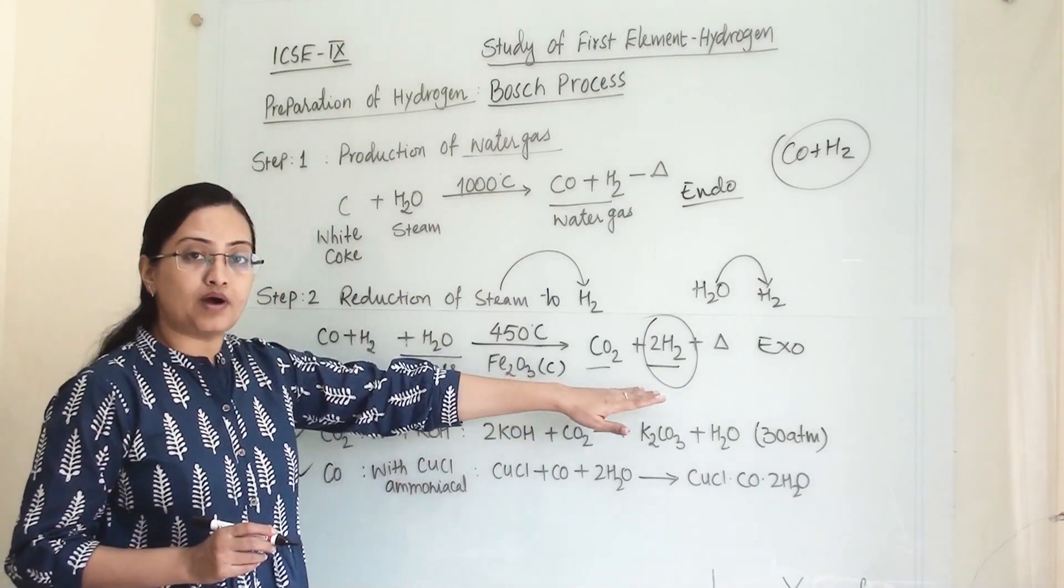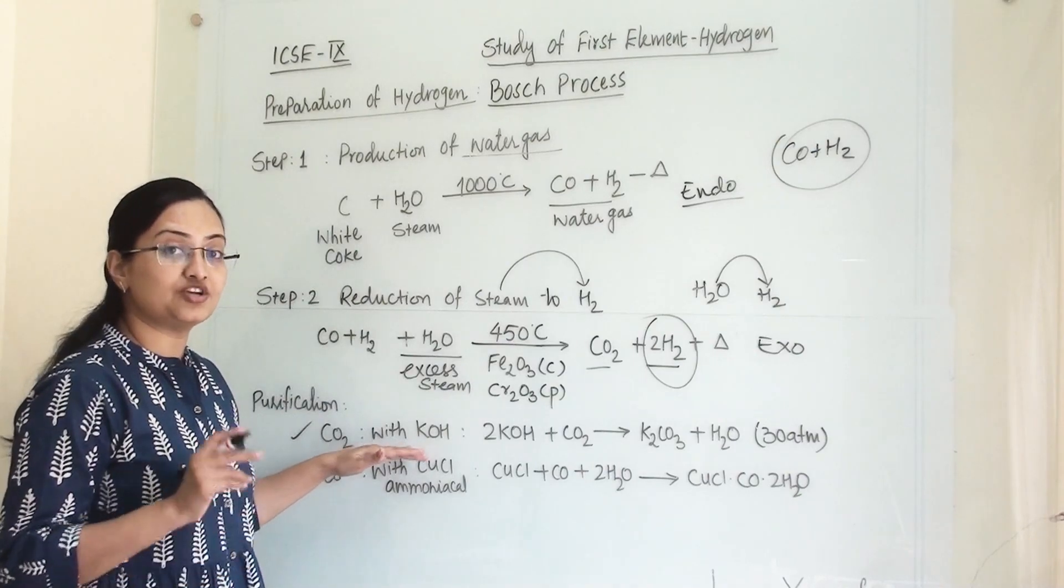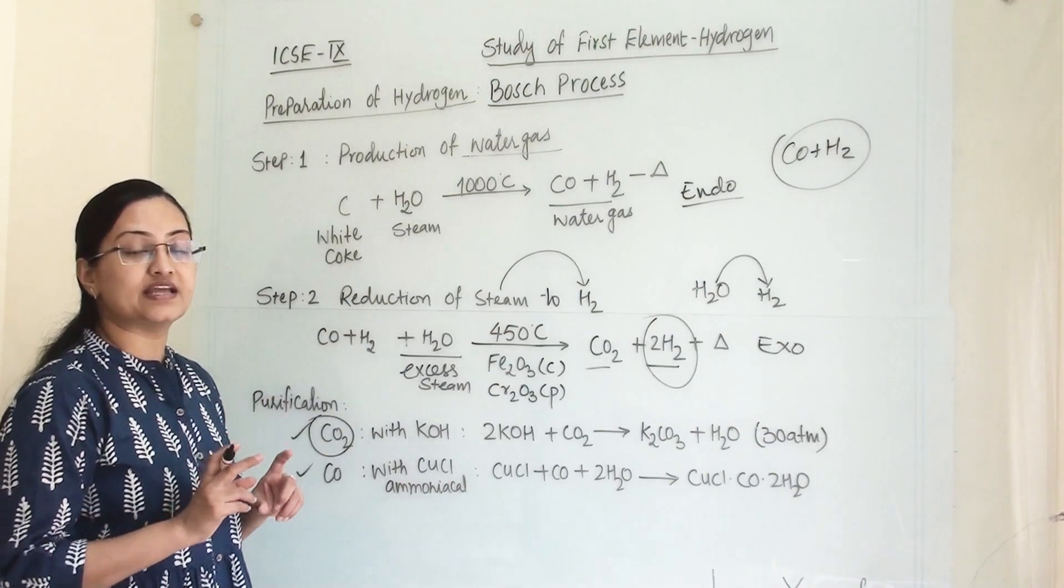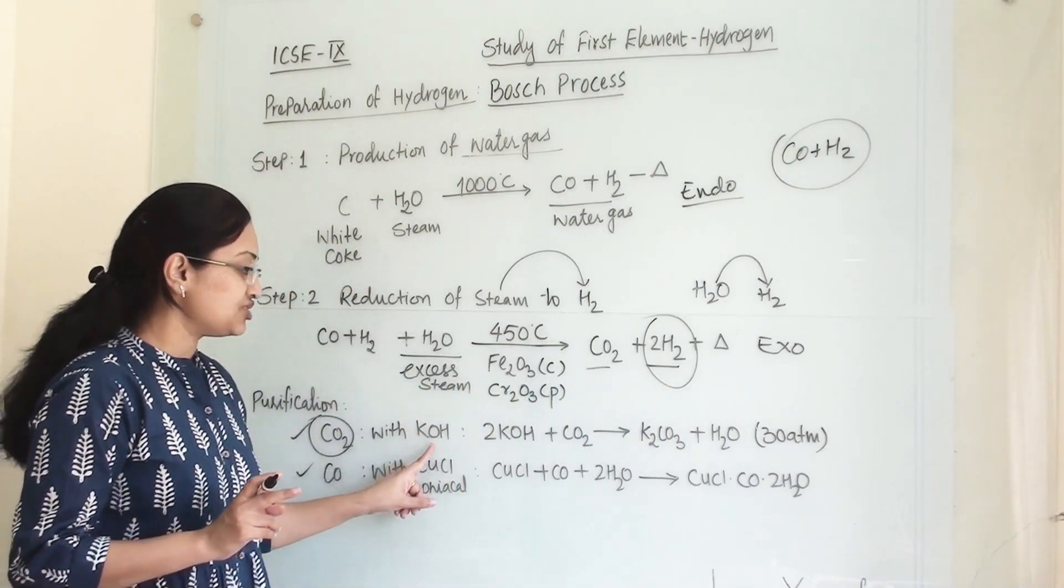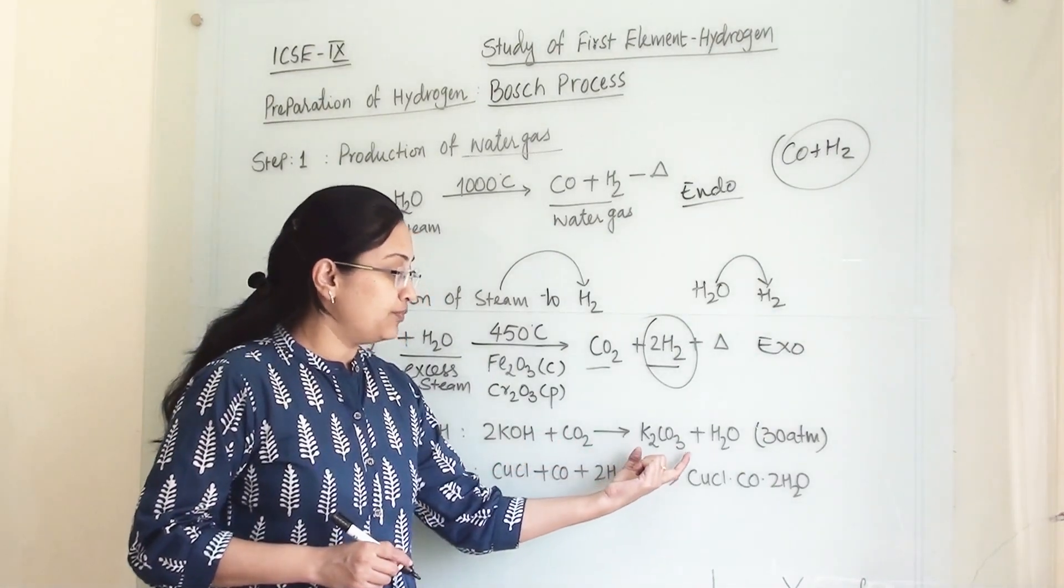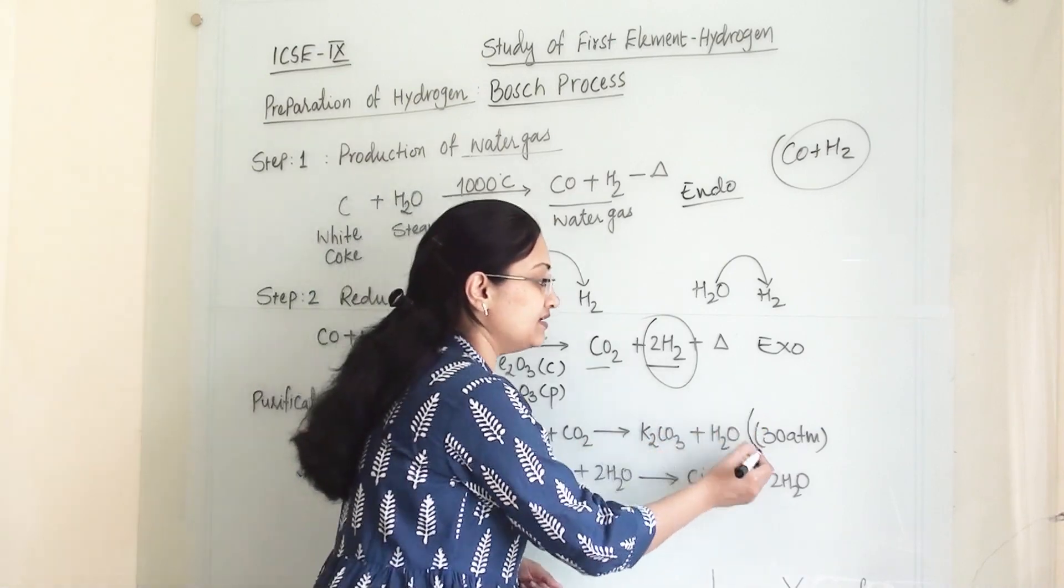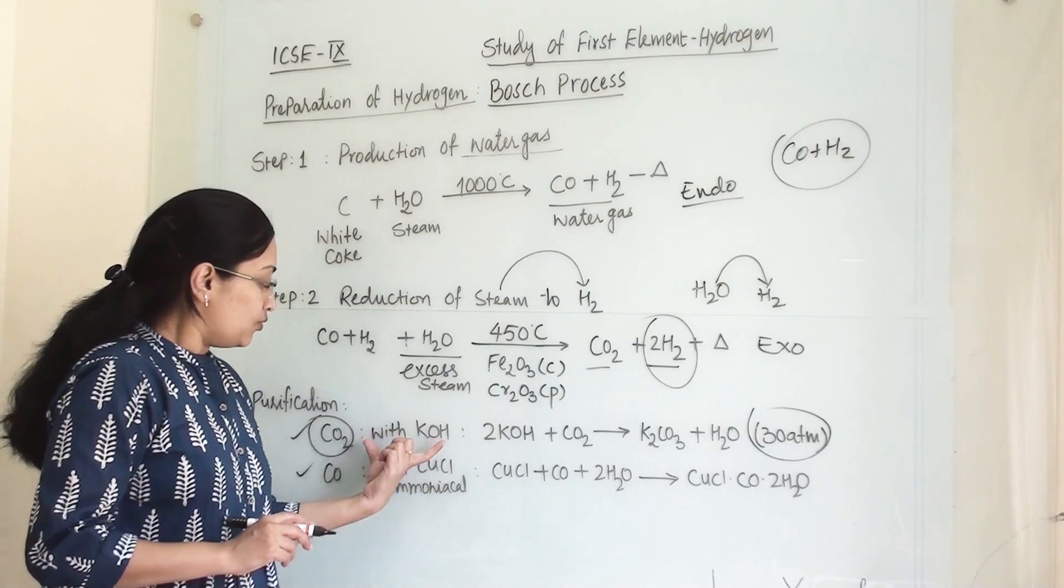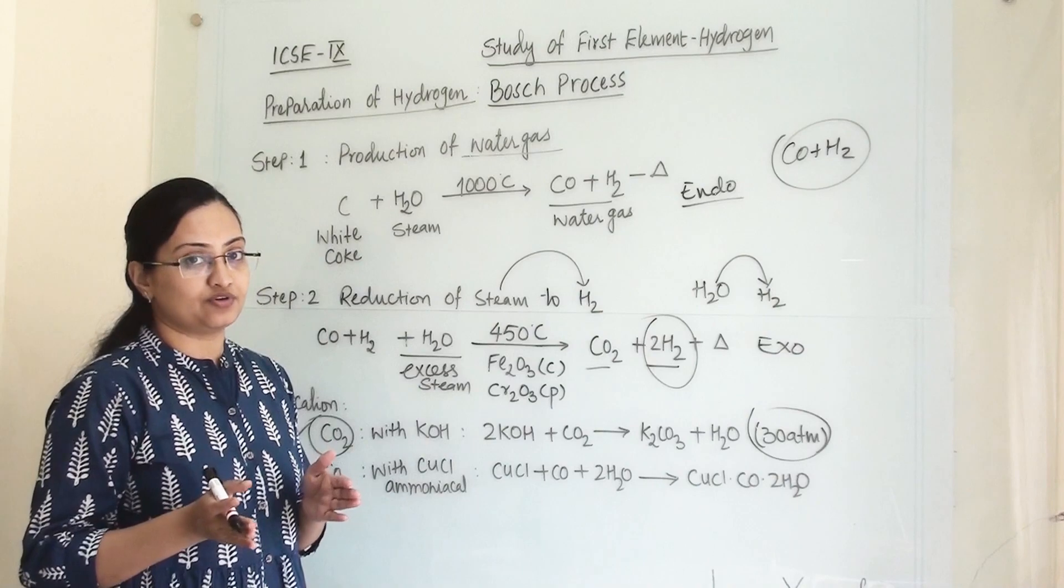We need to pass this hydrogen gas through a washer bottle of potassium hydroxide when there is an impurity of carbon dioxide gas present. When potassium hydroxide is there, it will form potassium carbonate and water. This reaction requires 30 atmospheric pressure. So carbon dioxide impurity can be removed through potassium hydroxide.